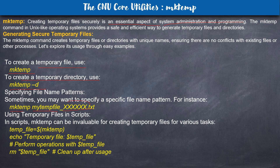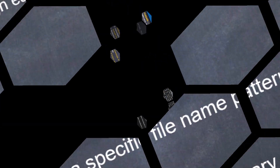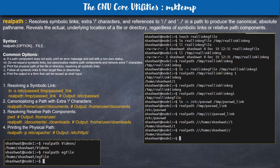The syntax is mktemp followed by a template like 'myfile_XXXX' — it will replace the X characters with random numbers to generate a unique name. So instead of creating a permanent file or directory, you can use mktemp to create a temporary file or directory securely in your script.